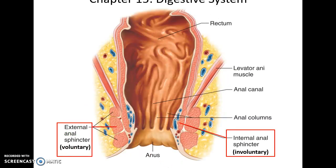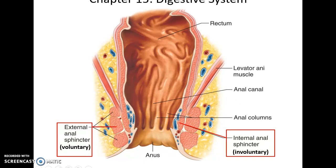Looking at a close-up of the anal canal, you can see that there are two sphincters: the external anal sphincter that we consciously control, and the internal anal sphincter that we do not voluntarily control. Although if you store the feces for way, way too long, eventually you'll lose control of the external anal sphincter as well.